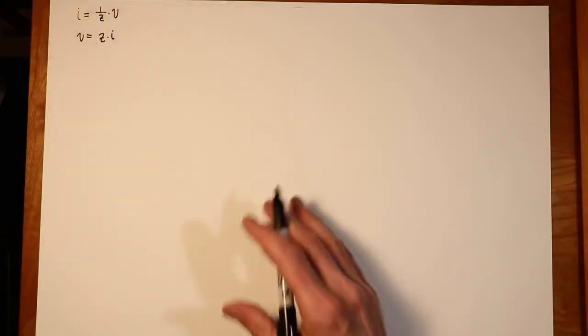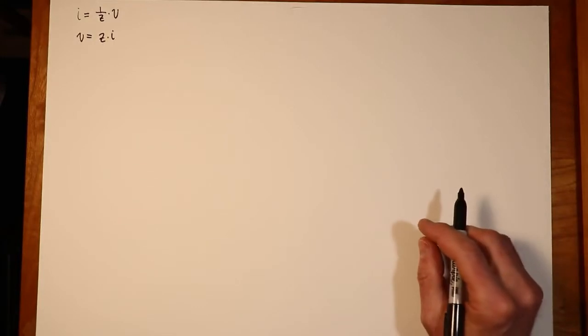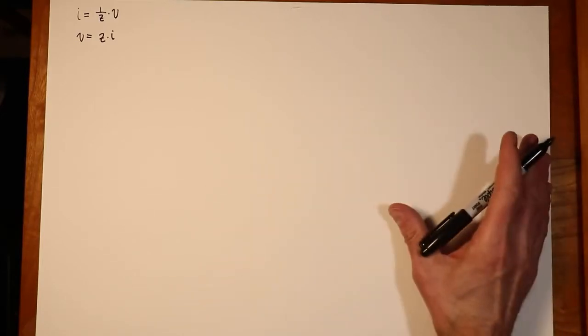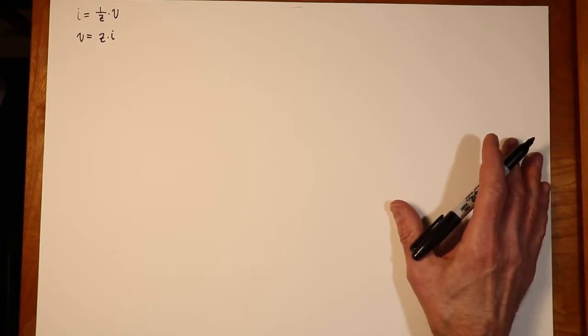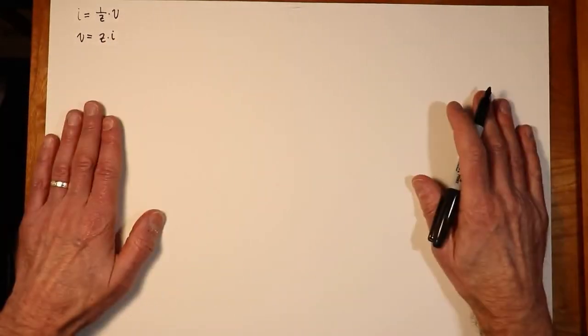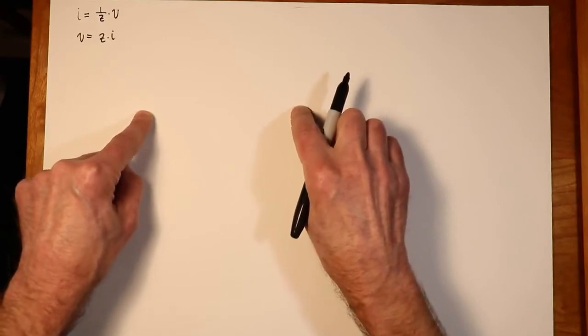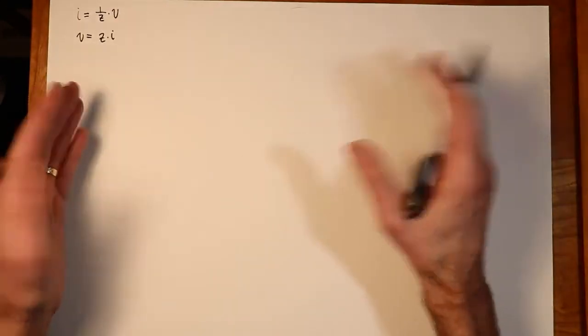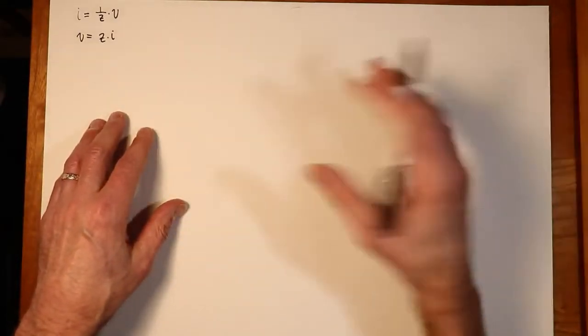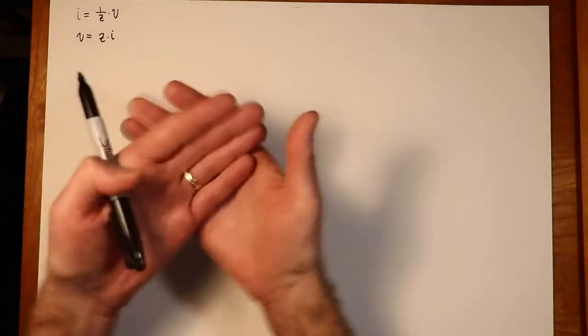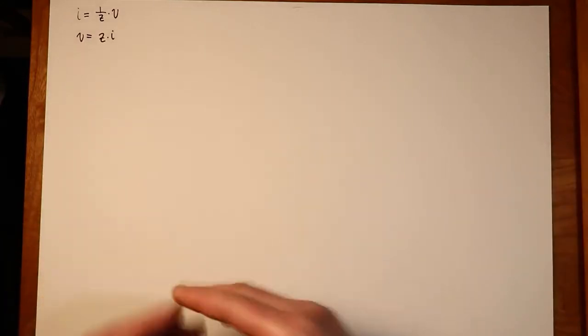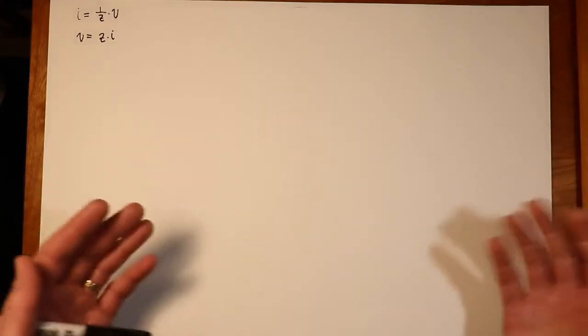The other issue with mesh, and practically speaking it's not a huge issue, is that nodal can solve virtually any circuit. Mesh is limited to what are called planar circuits. Those are circuits that if you draw them on a piece of paper, it's possible to draw them such that all of the wires and components don't cross. Most circuits that we deal with in the real world tend to be planar circuits, so that's not a practical limitation for the most part.